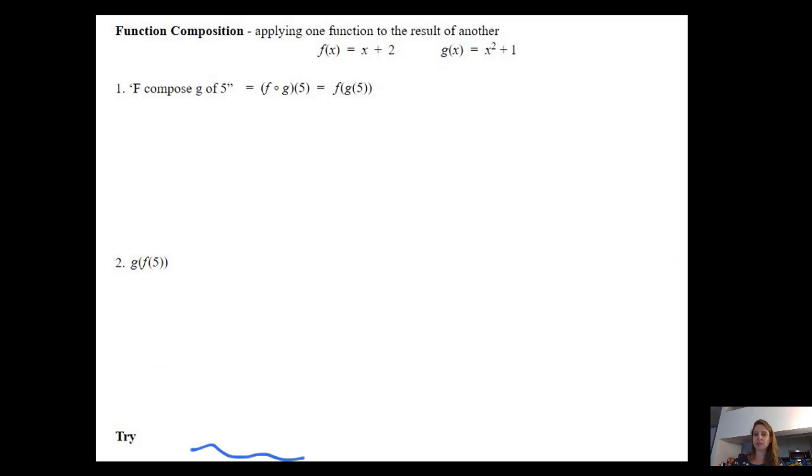Last up is function composition. And this is when we apply one function to the result of the other. So you have two functions, f of x and g of x. And number one says F composed G of five. To represent that in symbols, we've got this F open circle G of five. You could also see this represented as F of G of five.